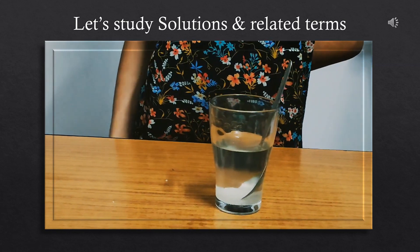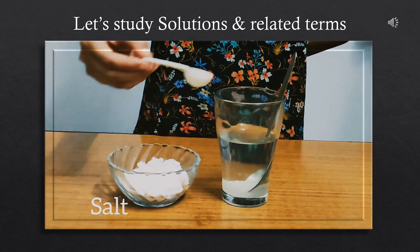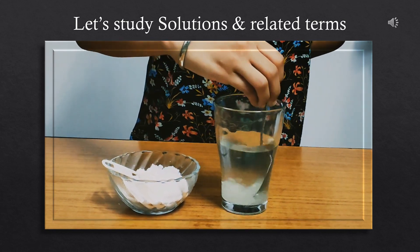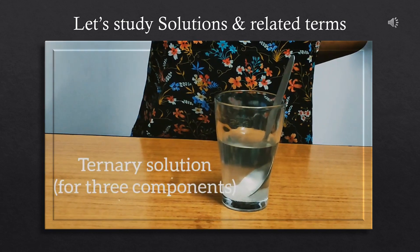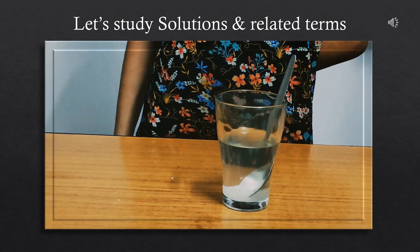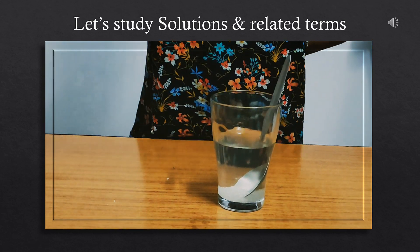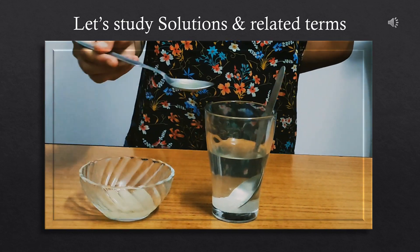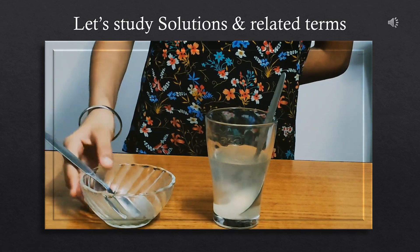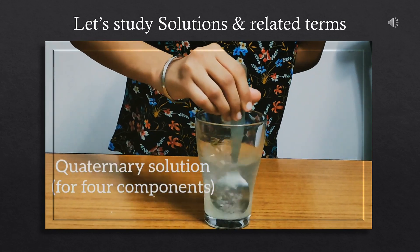In the unsaturated solution, add a small quantity of salt and mix. This becomes a ternary solution because now there are three components. Add a fourth component — lemon juice. Add some lemon juice and mix it well. Now it becomes a quaternary solution.